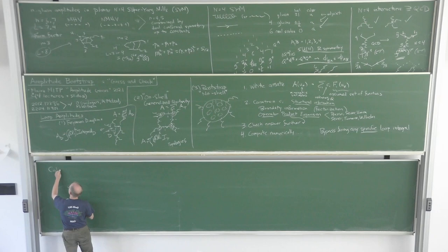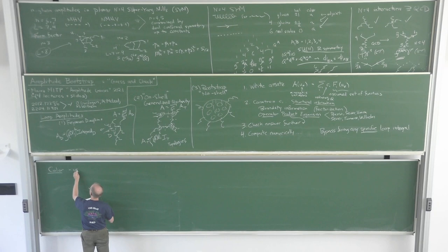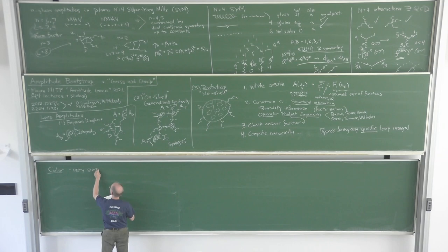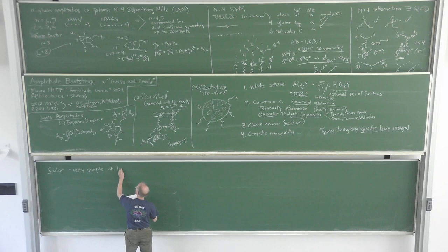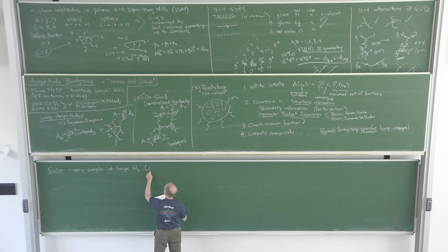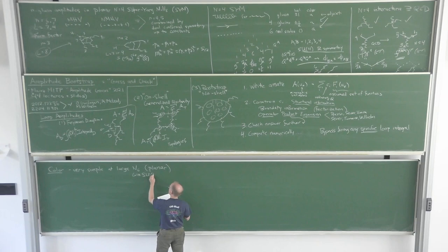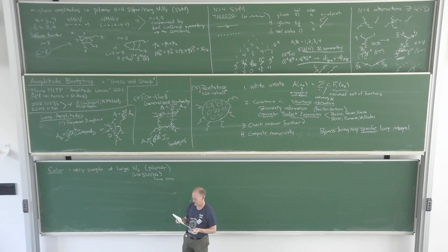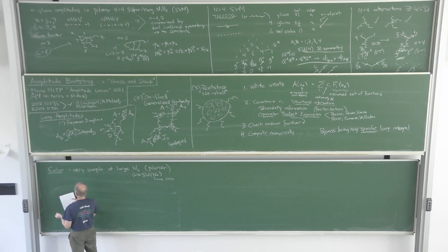Color is going to be very simple even at loop level because we work at large N_c — that's what 'planar' means in the name of the theory. The gauge group is SU(N_c), and we take N_c to infinity. The adjoint representation has dimension N_c^2 - 1, and it's in the tensor product of the fundamental with the anti-fundamental, minus a singlet.